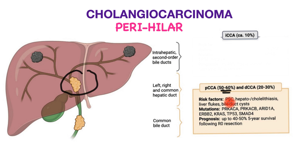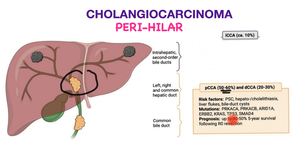The risk factors include primary sclerosing cholangitis, an autoimmune condition of the bile tubes prone to forming strictures both within and outside the liver, which are prone to developing cancers. Stones within the bile tubes and liver, liver flukes, and cysts of the bile ducts are also risk factors. Hereditary mutations or changes in DNA represent genetic predisposition factors. Around half of patients survive surgical excision when the cancer has been completely cut out.